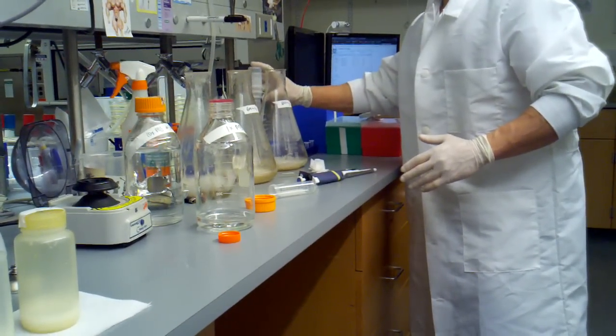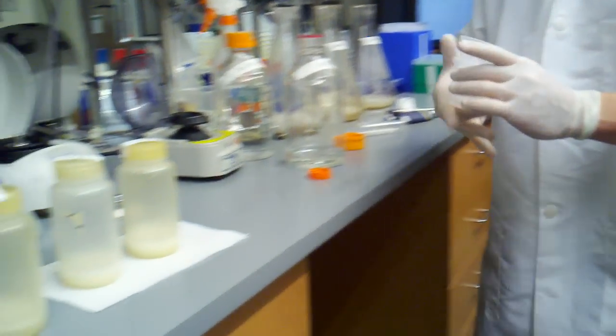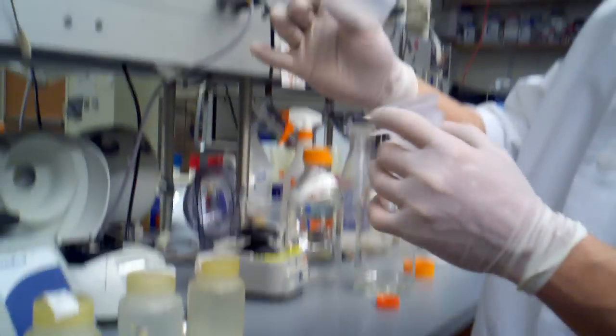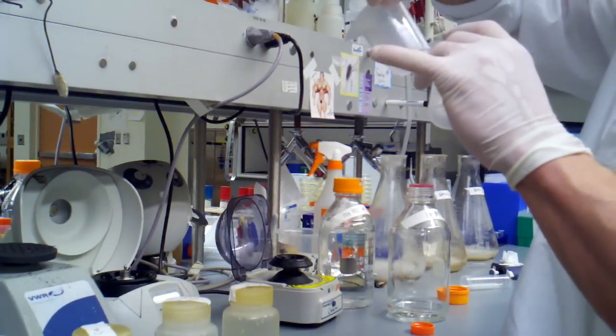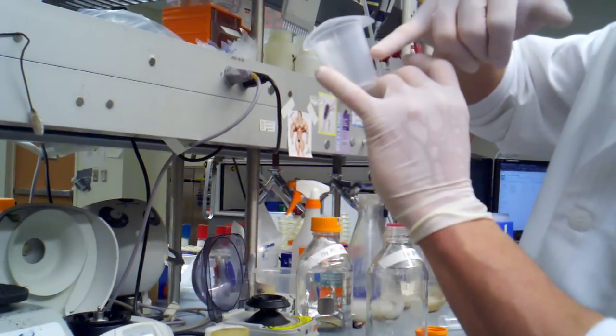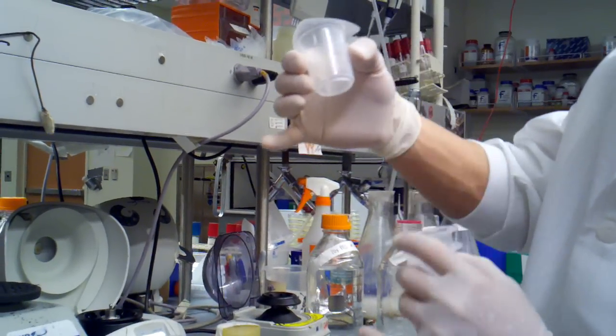And now we are ready to sonicate. So, in order to sonicate, we're going to be using these little mini cups. They hold 50 mils, so 25 mils is about right there. Plus the pellet will probably take us up to about 30 mils.